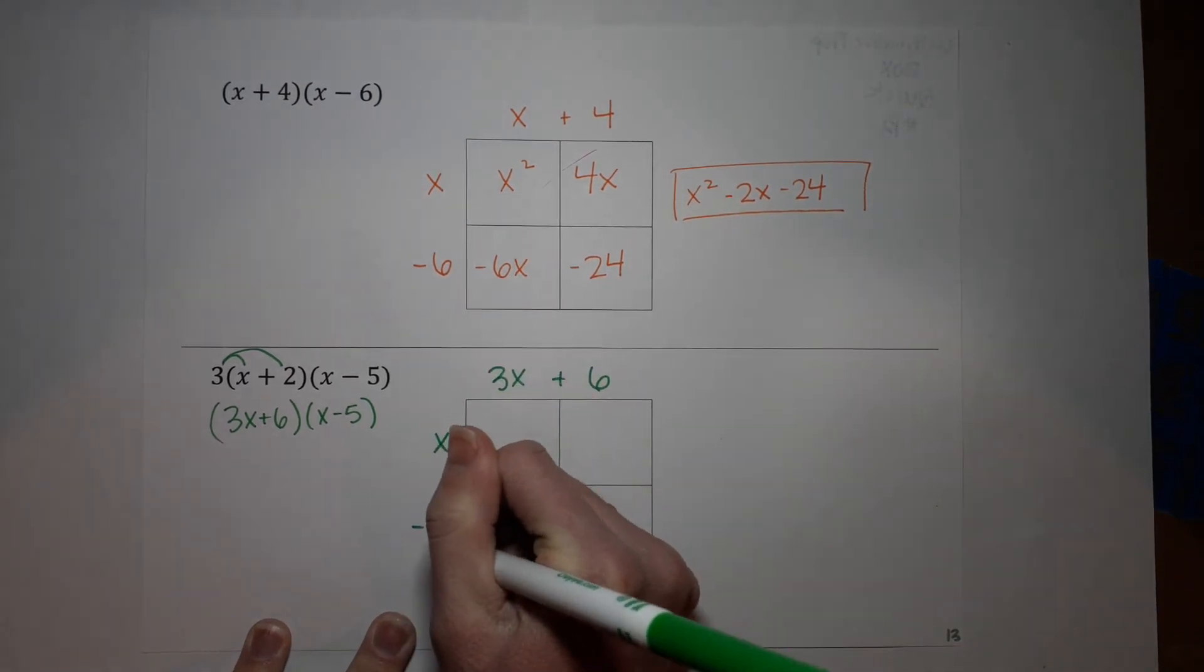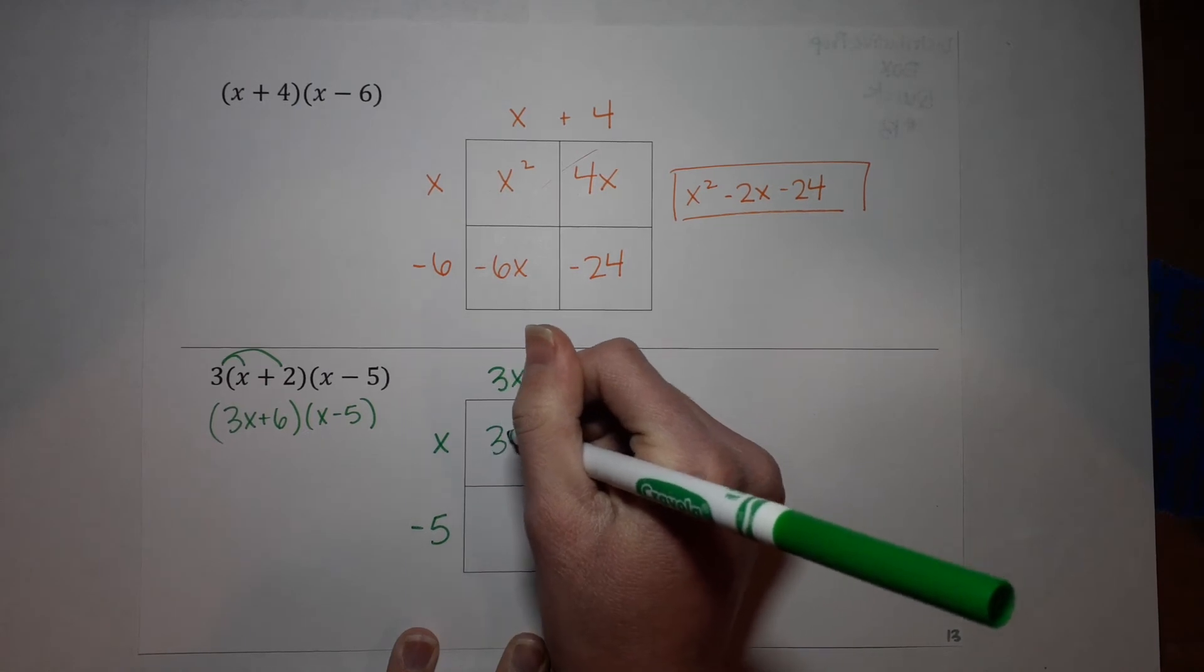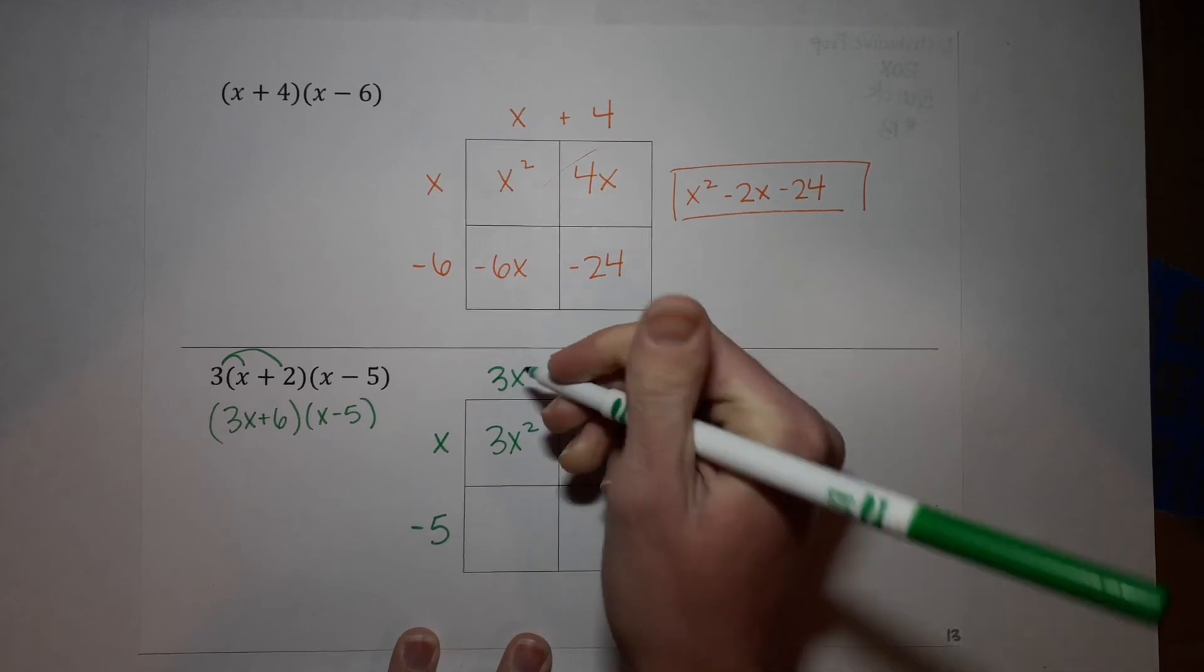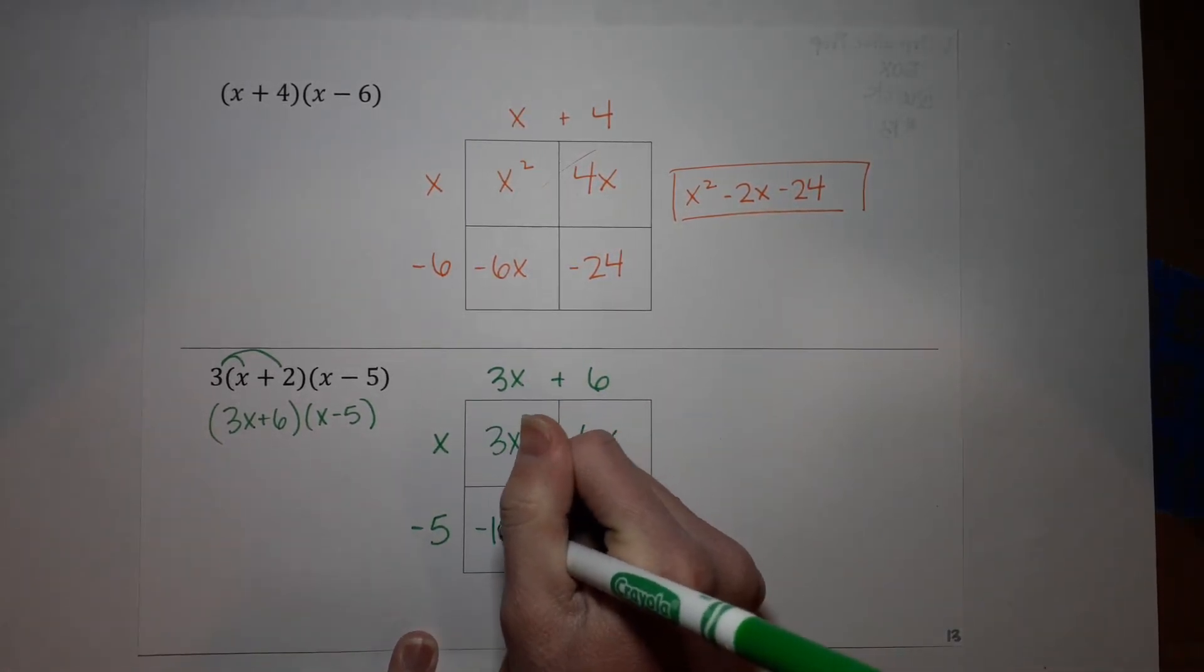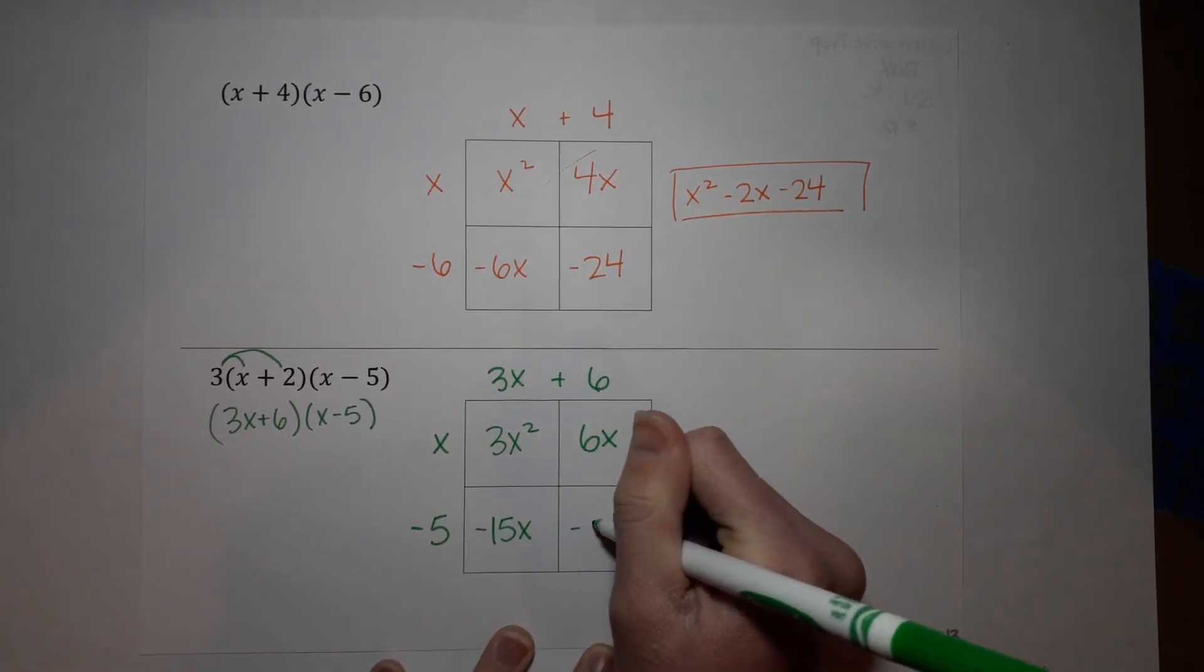x minus five on the side. Three x times x gives me three x squared, six times x gives me six x, three x times negative five gives me negative 15 x, six times negative five gives me negative 30.